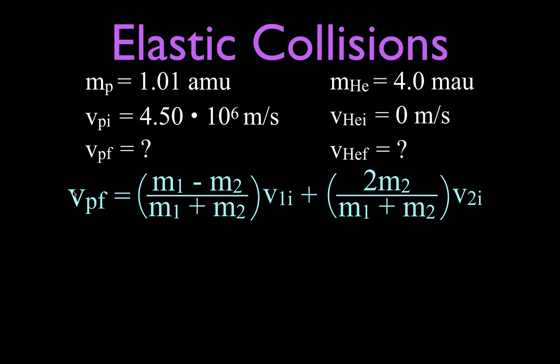So this is the final velocity of the proton, and we have M1 minus M2, M1 plus M2, the initial velocity of particle number one which is our proton, and then we have M2, M1, M2, and V2 over here. Now this is M1 and this is M2.